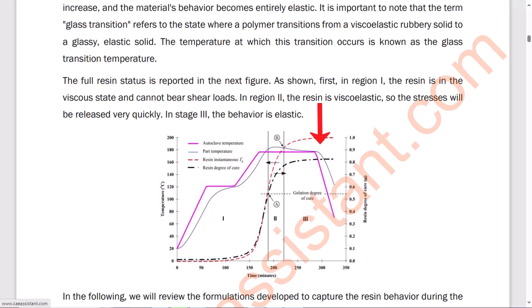When the glass transition occurs, the relaxation times suddenly increase and the material's behavior becomes entirely elastic. It is important to note that the term glass transition refers to the state where a polymer transitions from a viscoelastic rubbery solid to a glassy elastic solid. The temperature at which this transition occurs is known as the glass transition temperature. The full resin status is reported in the figure.